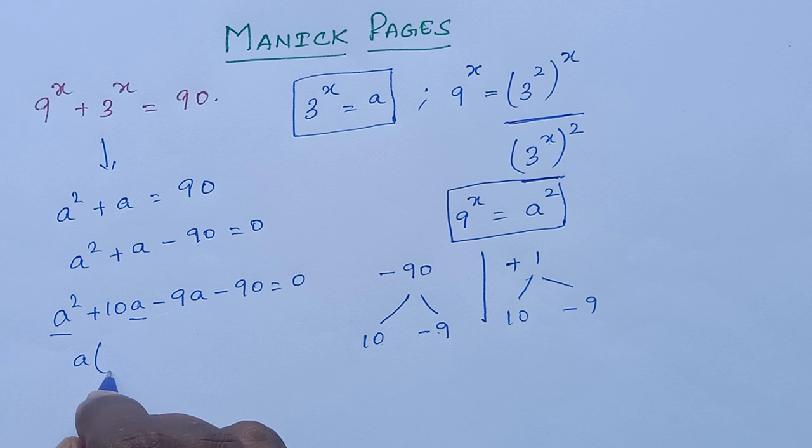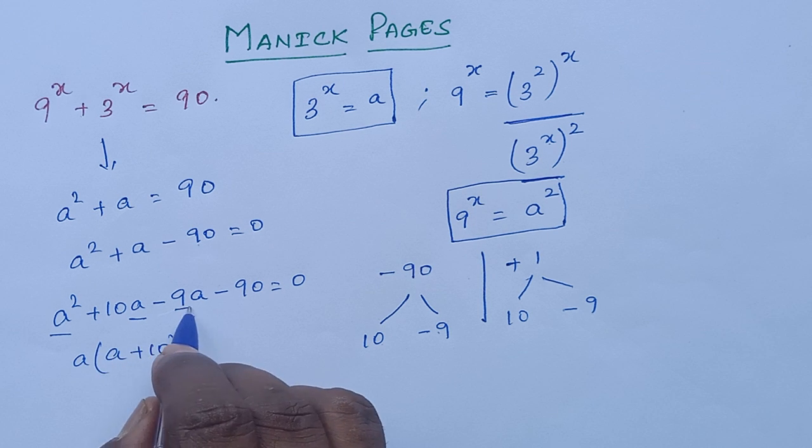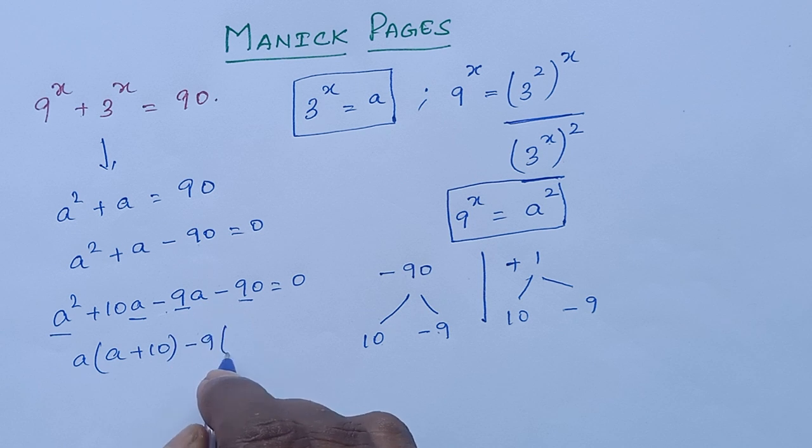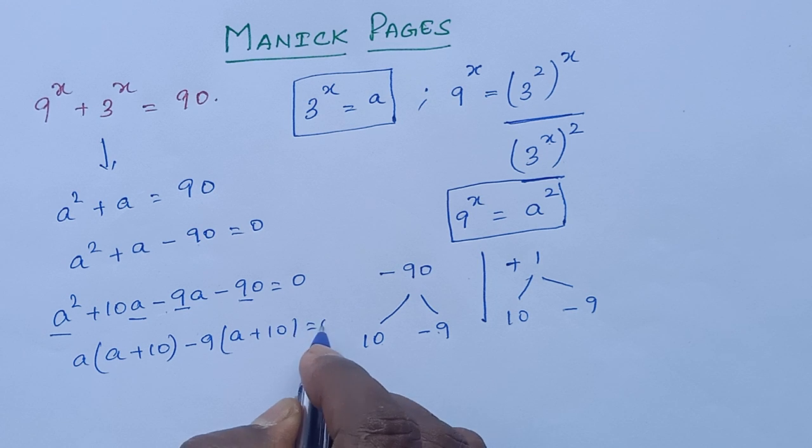a is common, we can take it outside with a plus 10. Here, 9 is common, so take minus 9. So we have (a plus 10) and (a minus 9) equals 0.